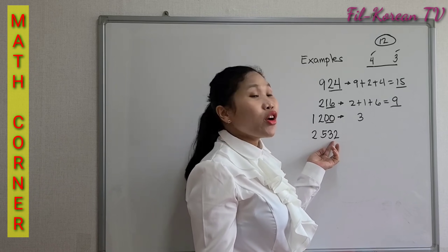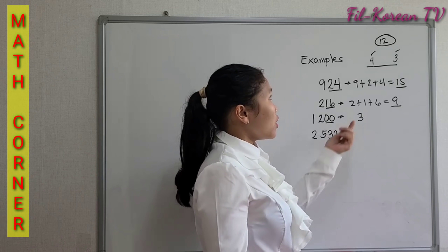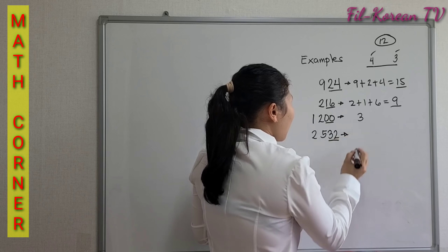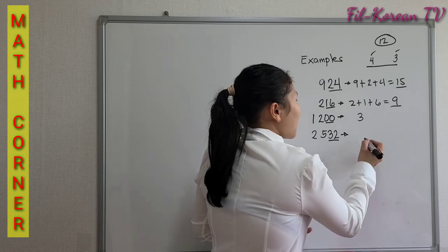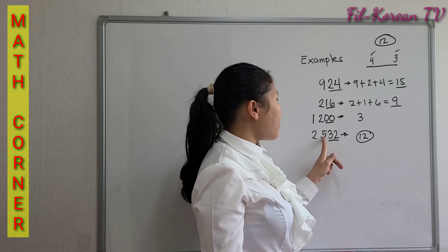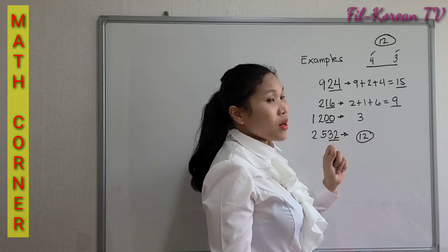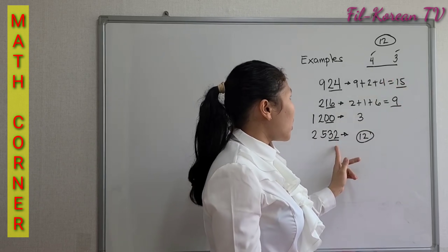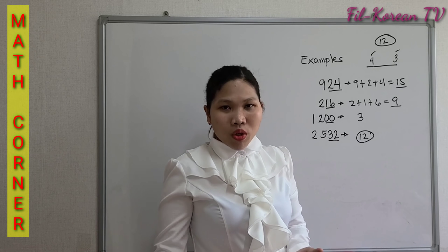Another example: 2,532. The last two digits, 32, are divisible by 4. If we add the digits, 2 plus 5 plus 3 plus 2 equals 12. 12 is a multiple of 3, so it is divisible by 3. Therefore, 2,532 is divisible by 12.